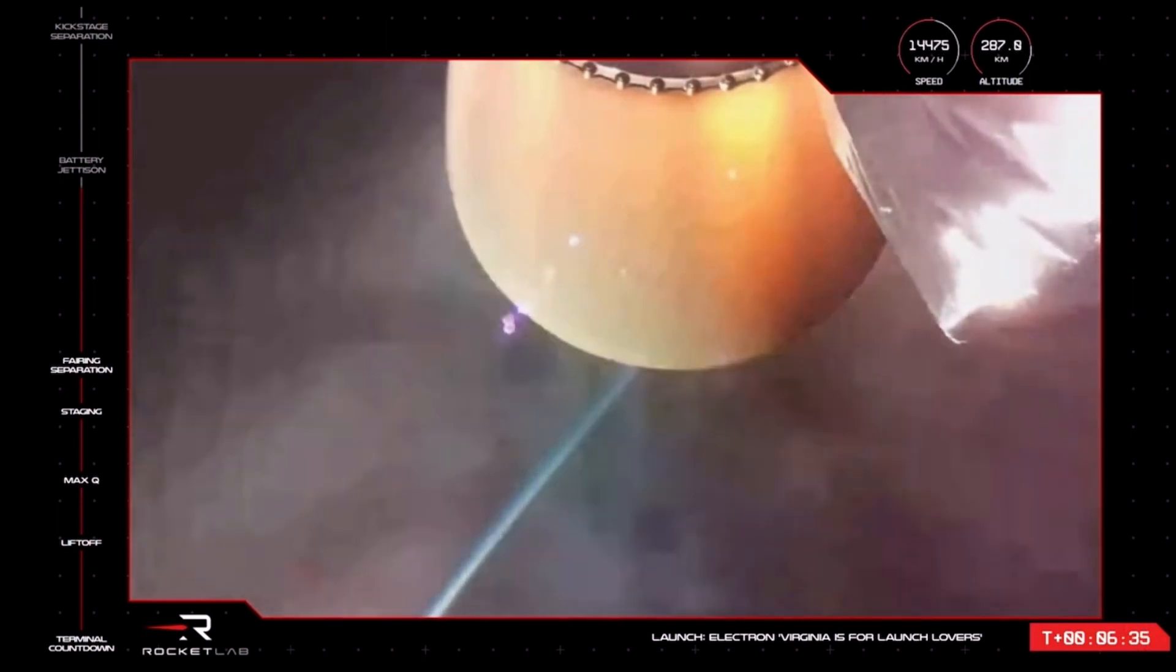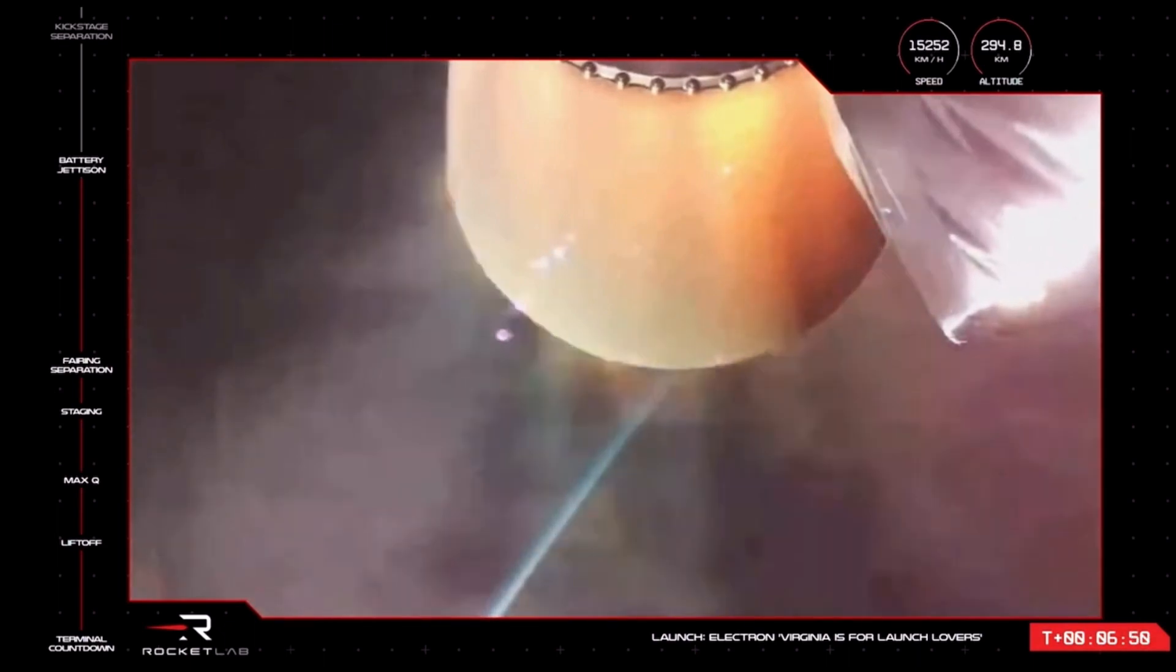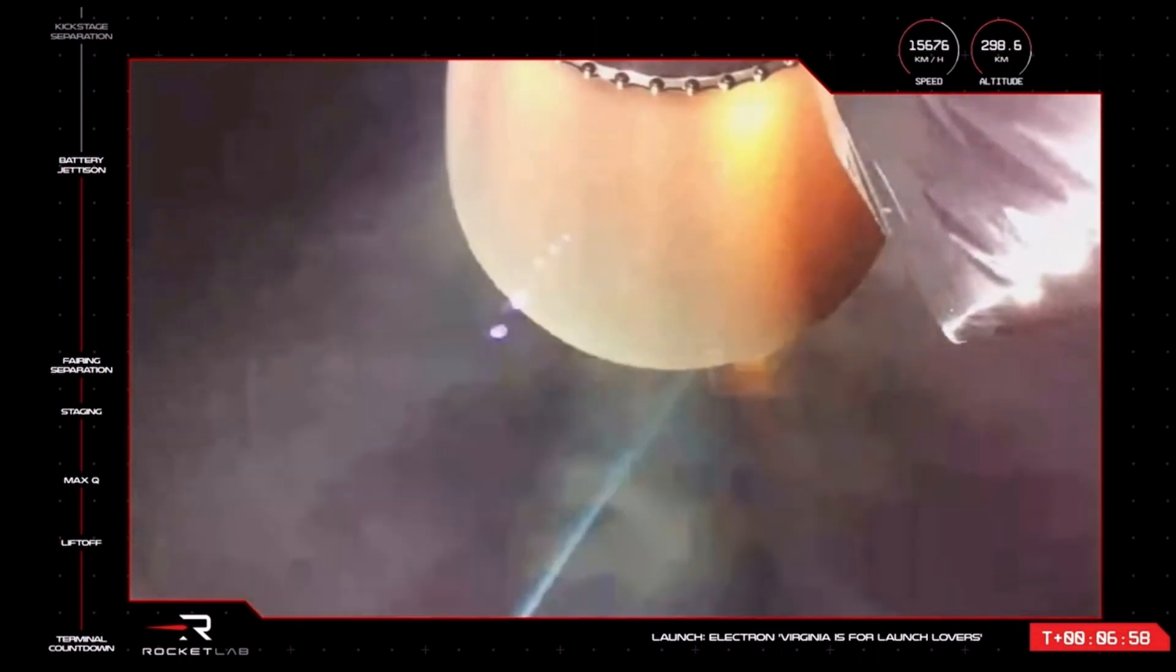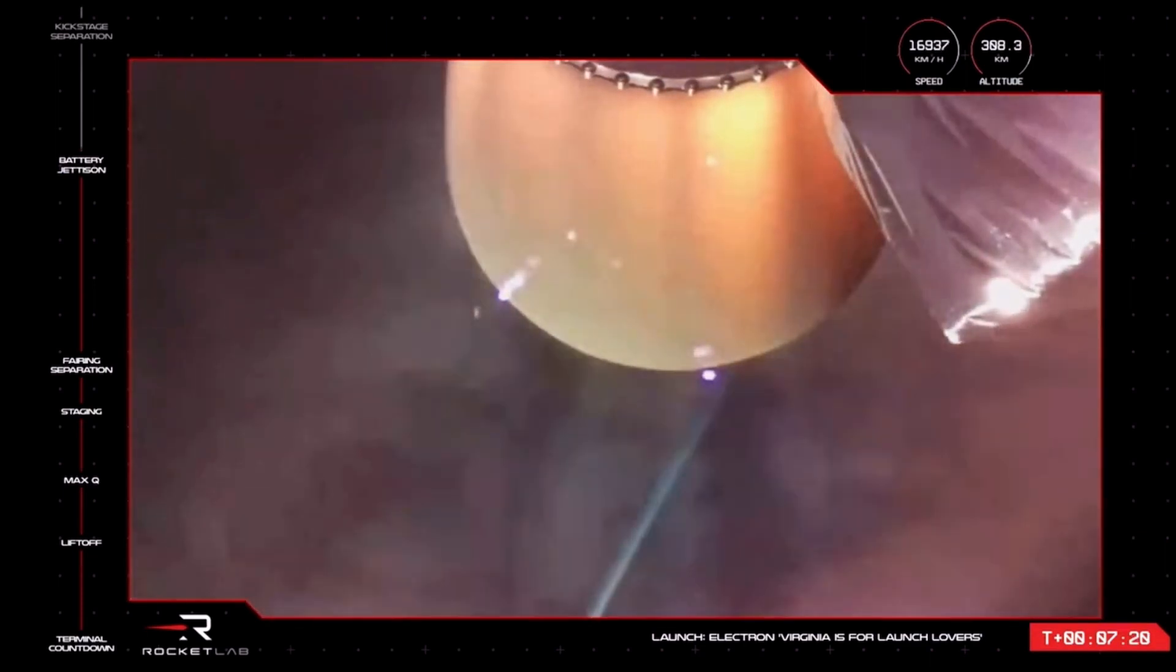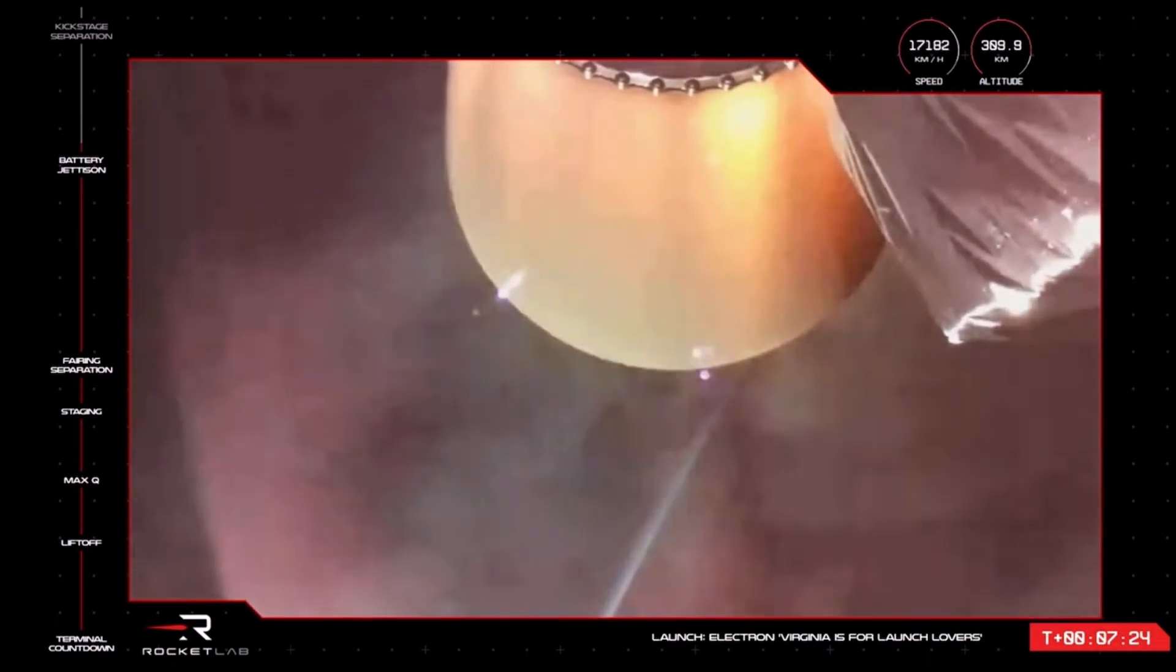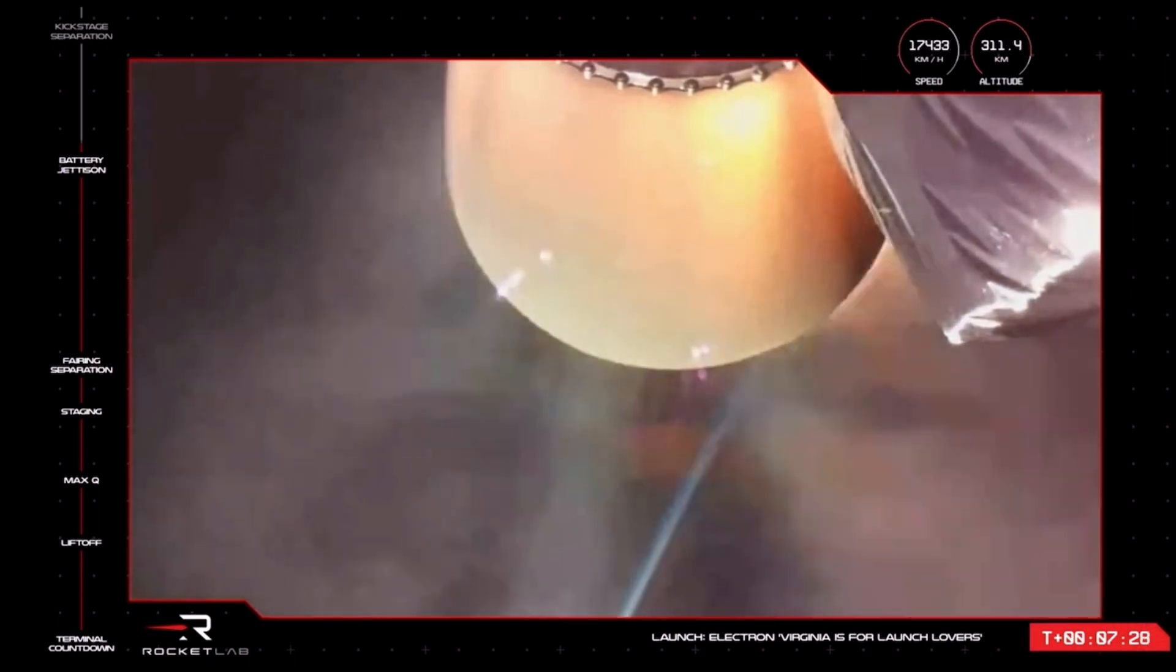Third leg down. Hot swap successful. Battery jettison confirmed. Our vehicle control operator there reporting that the battery hot swap was successful and so continues our Virginia is for Launch Lovers mission. The second stage Rutherford engine is firing nominally and propelling Electron past 16,000 kilometers per hour with that new high voltage battery discharge holding nominal. That second stage and the Hawkeye 360 satellites are now at an altitude exceeding 300 kilometers.